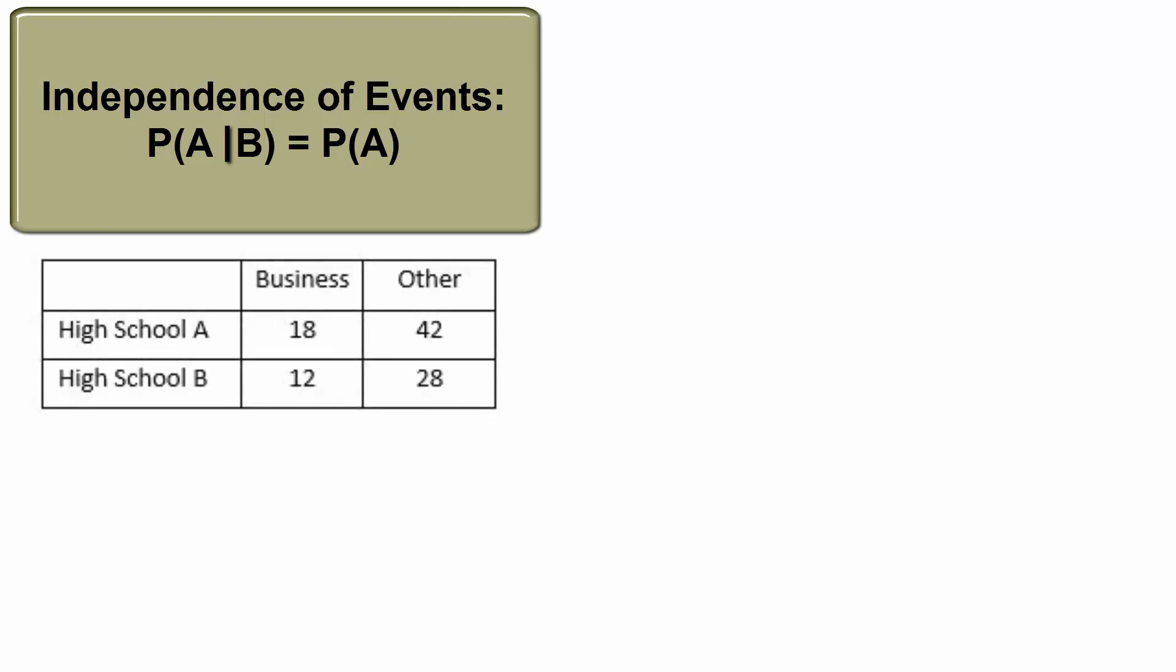Look at this table of high school seniors declaring a major at college next year. There's much to be gained from this problem. Independence is a major concept with many implications. Notice there are 60 students from high school A. 18 of them have declared a business major. Thus, the conditional probability, if we shrink the sample space, is 18/60 or 0.3.